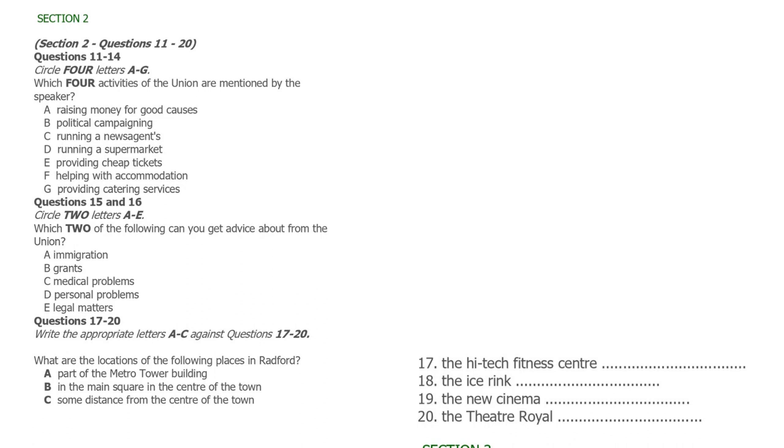Then, let me see. In the main square, just two minutes' walk from the Metro Tower, there's the Theatre Royal which often gets London productions on tour. And in the streets nearby, you can find a good range of inexpensive restaurants including Indian, Chinese, Thai and Italian. That is the end of Section 2. You will now have half a minute to check your answers.